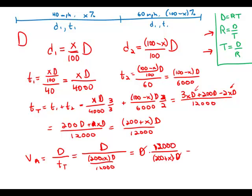And of course, the Ds cancel, and we're left with this fraction 12,000 over 200 plus X. And this fraction is equivalent to answer choice E.